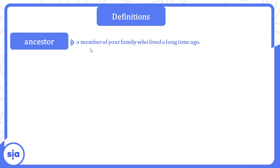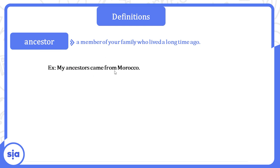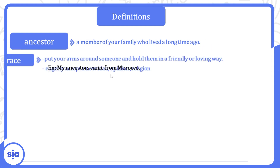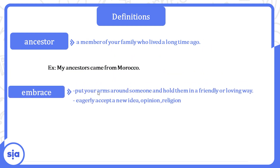'Ancestor' means a member of your family who lived a long time ago — الأسلاف أو الأجداد. Example: My ancestors came from Morocco — أسلافي أجدادي أصلهم من المغرب.